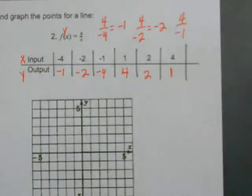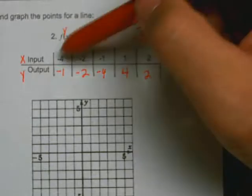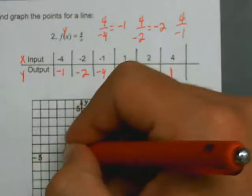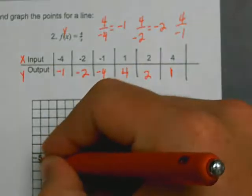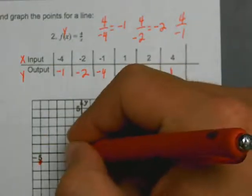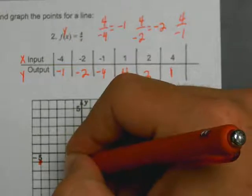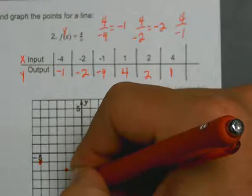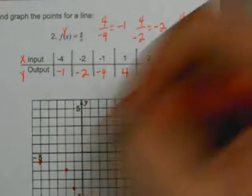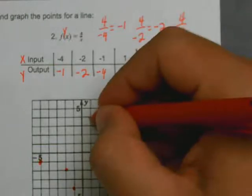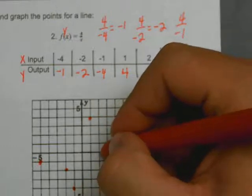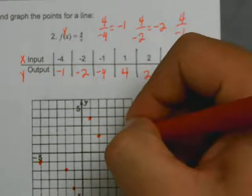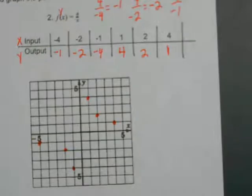Now you have all these points that need to be graphed, so you just graph them all. Negative 4, negative 1. Negative 4, negative 1. Negative 2, negative 2. Negative 1, negative 4. 1, 4. 2, 2. 4, 1, like that.